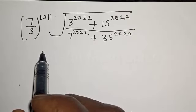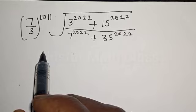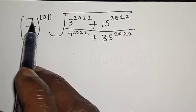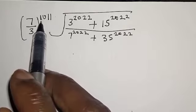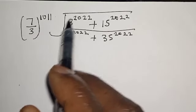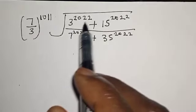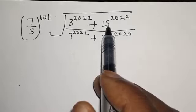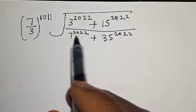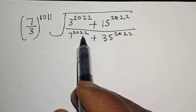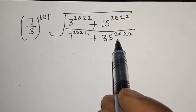Hi everyone, welcome to my class today. Solve the equation: 7 over 3 raised to power 1011, multiplied by the square root of 3 raised to power 2022 plus 15 raised to power 2022, all over 7 raised to power 2022 plus 35 raised to power 2022.